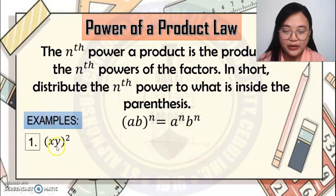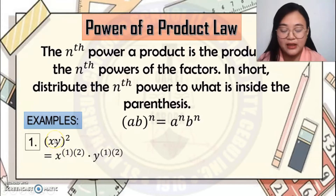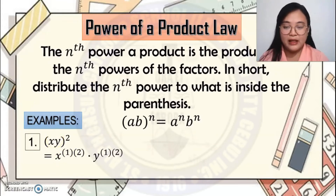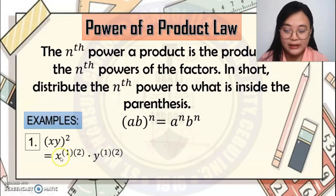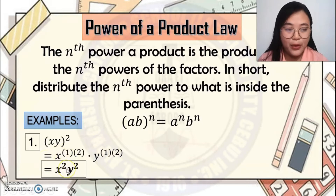For example, (xy) raised to 2. Distribute 2 to the terms inside the parenthesis. Note that if there is no exponent shown on a term, its exponent is automatically 1. So it becomes x raised to 1 times 2, times y raised to 1 times 2. Multiply the exponents — the final answer is x squared y squared.